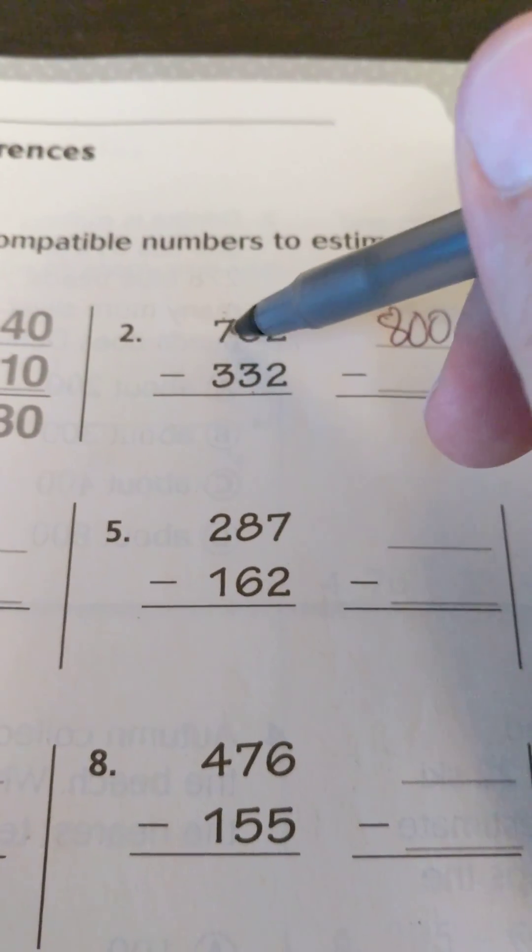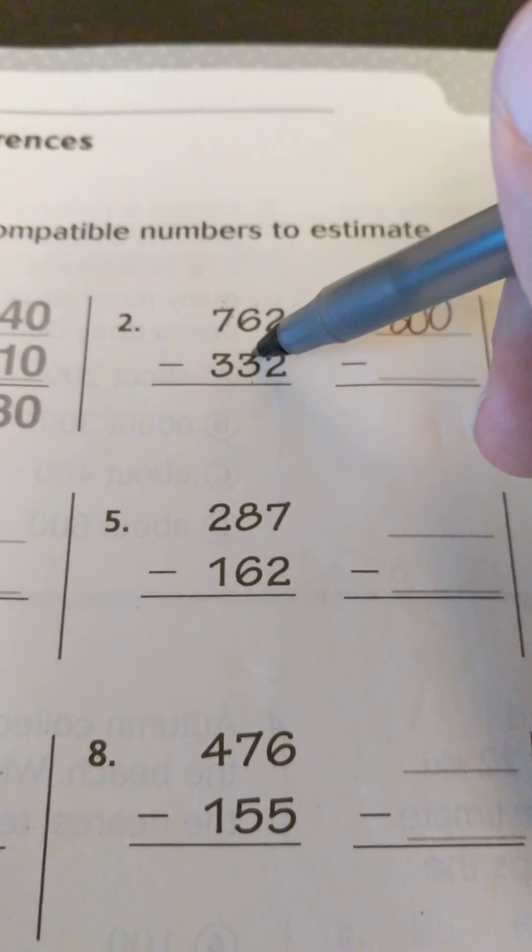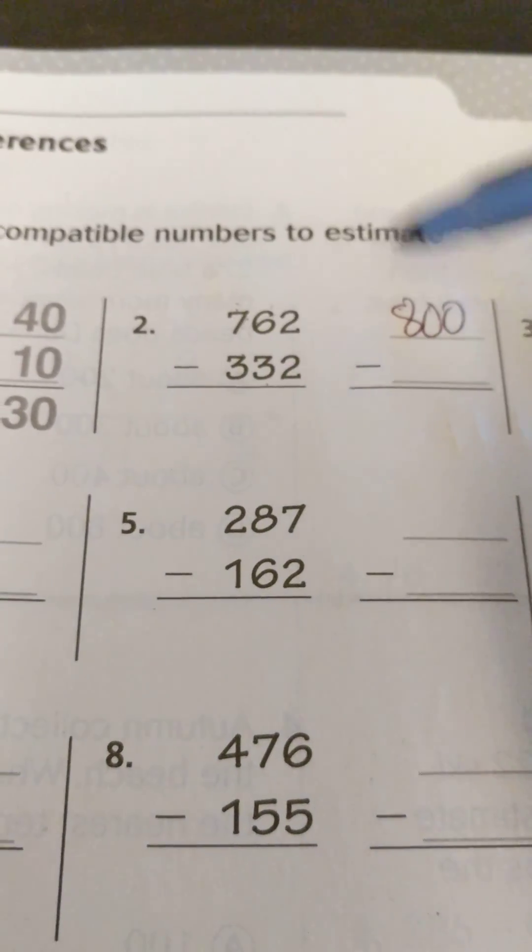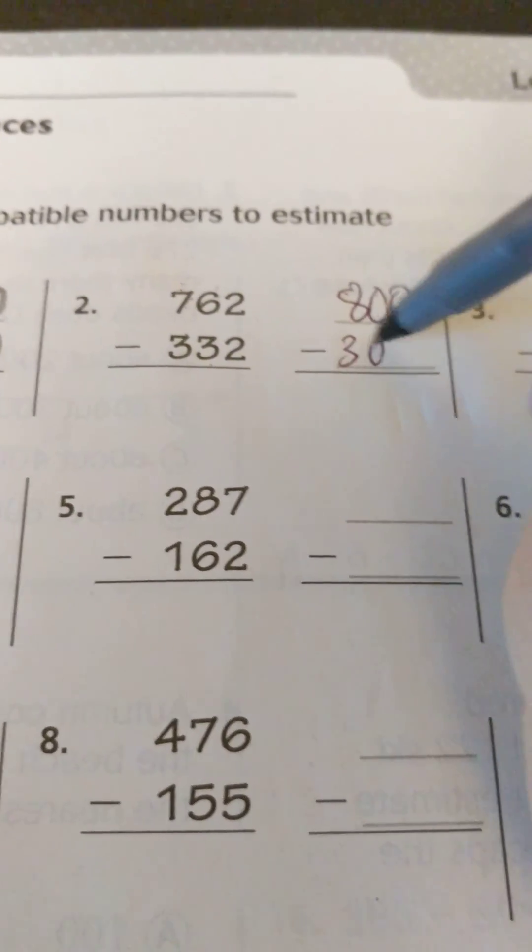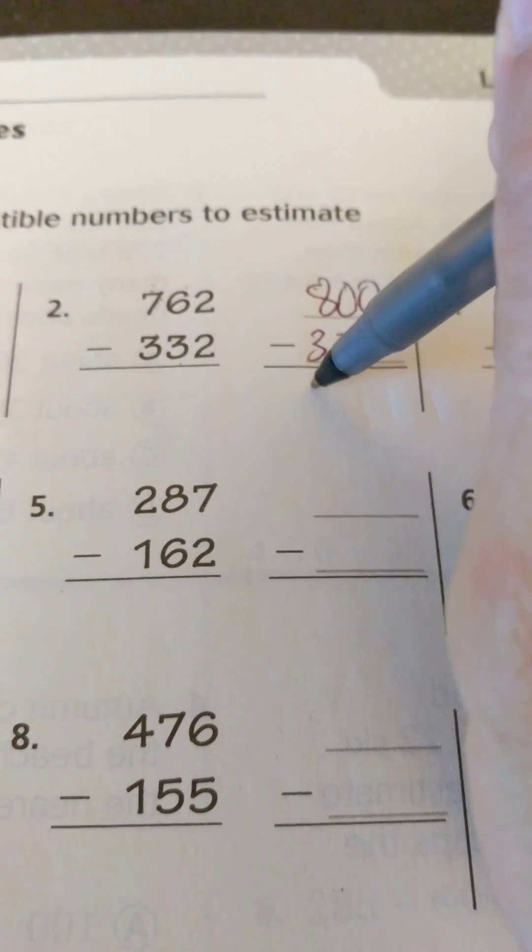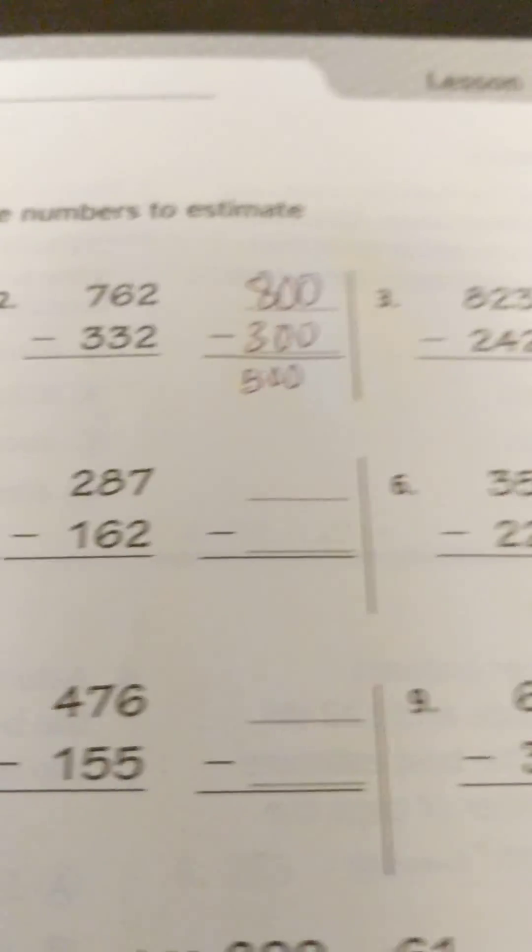And then on this one here, again, I'm going to look at my tens. The number is less than five, so this will stay 300. I'll go ahead and subtract. 800 minus 300 is 500. And that's how you solve for that one.